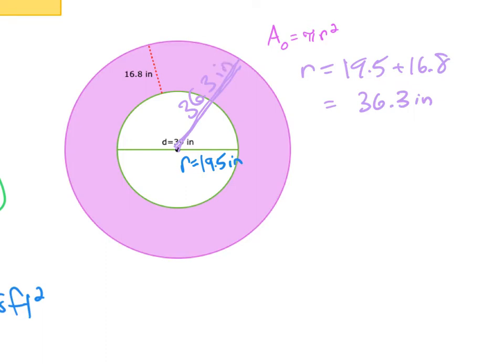So now I can figure out my area of my big circle. So area of the big circle is equal to pi times 36.3 squared. So when I square 36.3, I get 1317.69. I'm just going to leave this answer in terms of pi. So that's my total answer. I'm going to give the final answer in terms of pi.